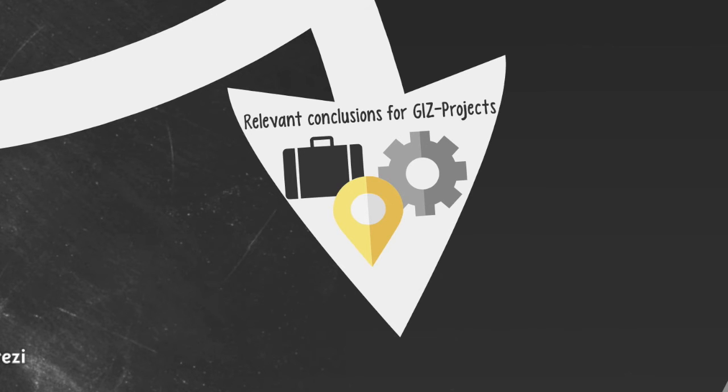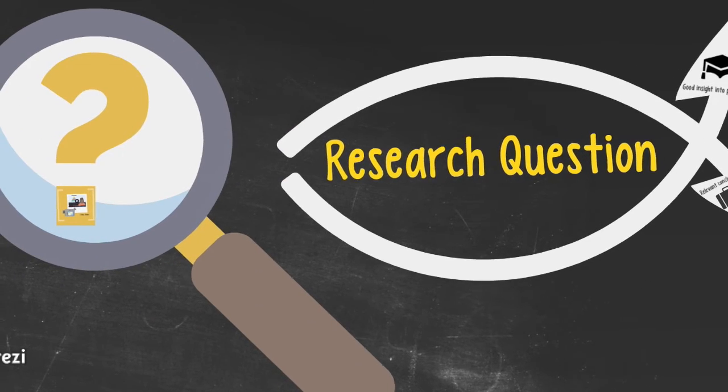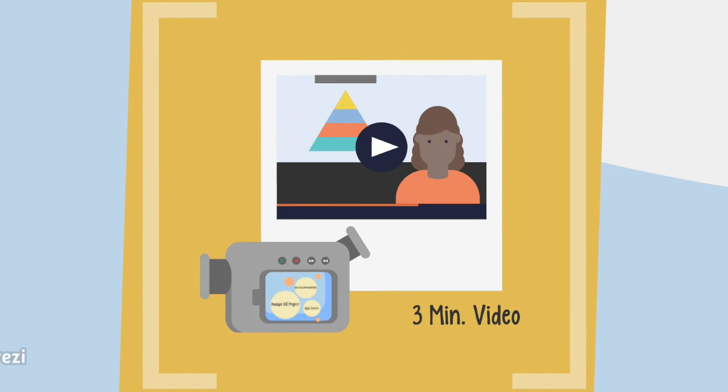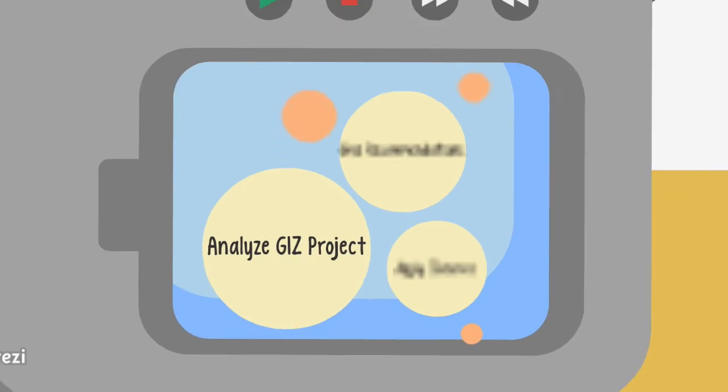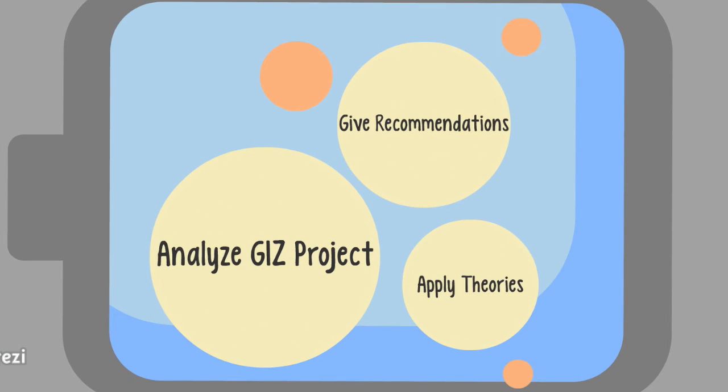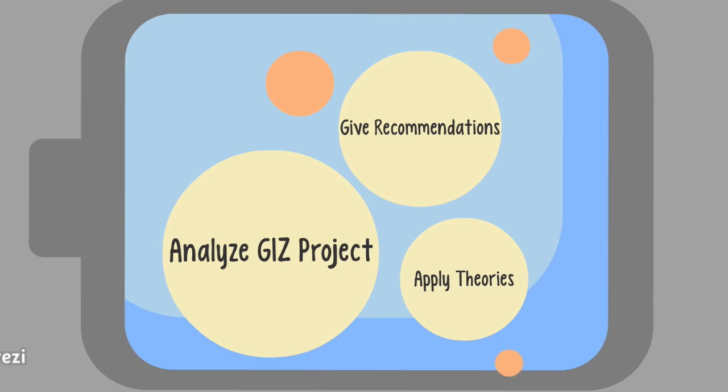Based on the research question, the students will prepare a maximum three-minute video or animation that presents the results. There are different approaches to work on a GIZ project. Students could analyze the project and formulate possible recommendations for the future or include alternative approaches to reach the project's goals. They could also apply suitable theories to the project, for example the multi-level approach or the game theory.